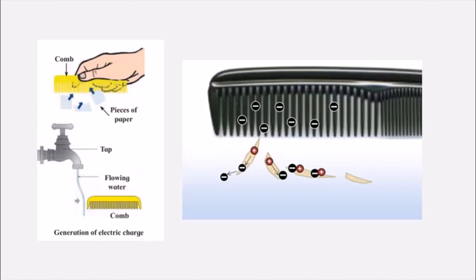Now let's understand how generation of electric charge takes place — when we charge an object by contact, and when we charge an object by induction. First, take a comb and rub it on paper. Now try to bring another comb near that comb. What you will see is that there is some attraction taking place, because one is charged and the other is not charged, so the opposite charges try to attract each other.